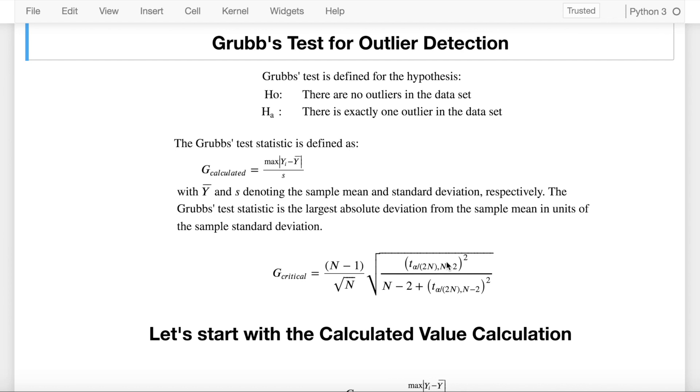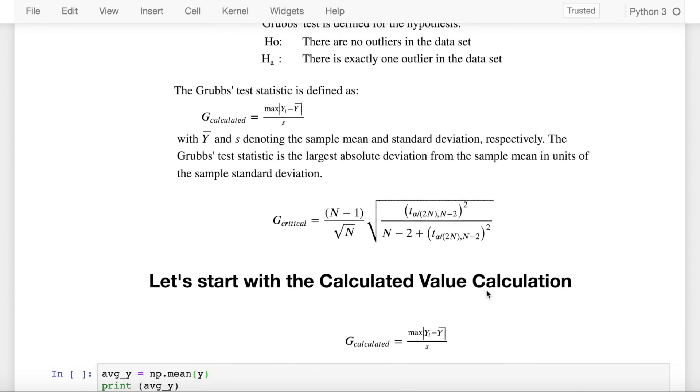And you have a critical value which looks very daunting but it's very fairly simple to understand. It's basically a ratio of numerator by denominator where numerator and denominator are both t-distributions. The t-distributions that I've mentioned or this part of the formula denotes the critical value of the t-distribution with n-2 degrees of freedom and a significance level of alpha by 2n, where n is the number of elements present in your dataset. So this is the critical value calculation. The above is the calculated or the test value calculation.